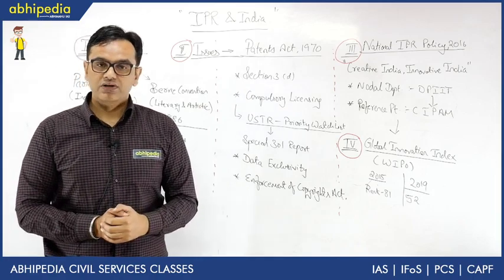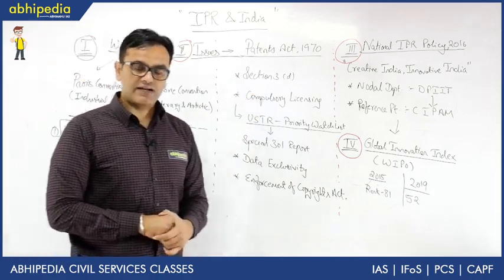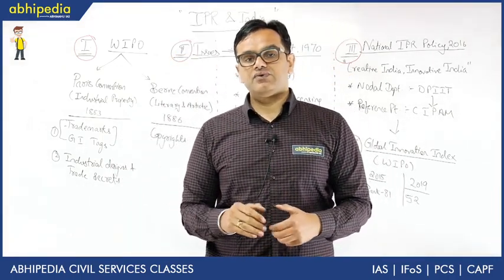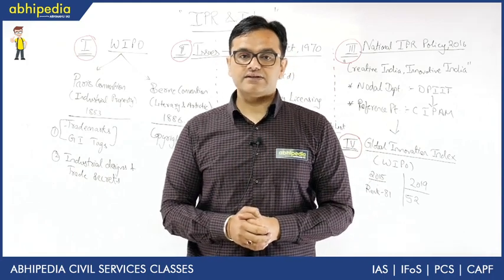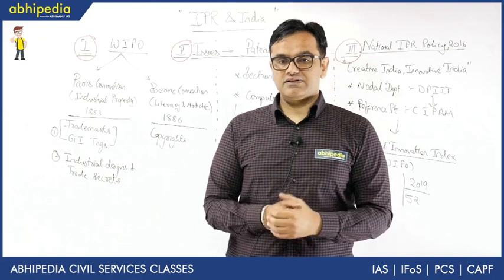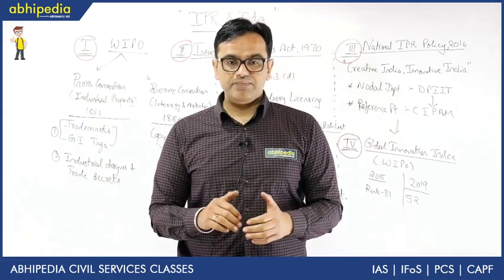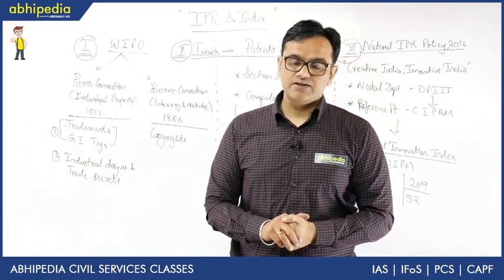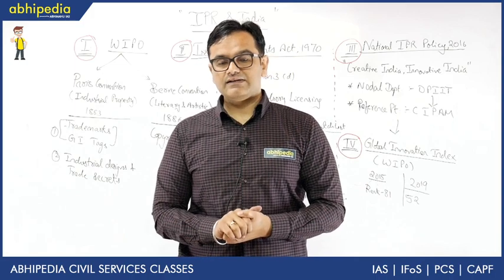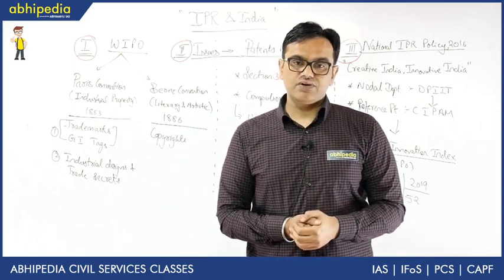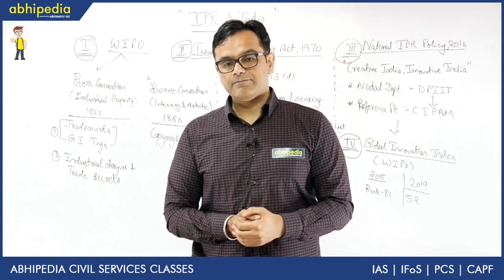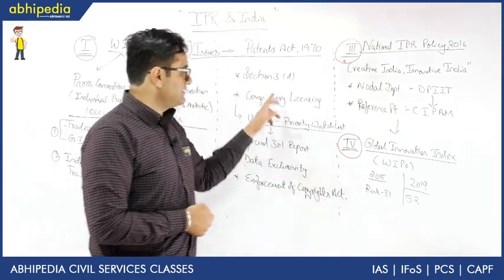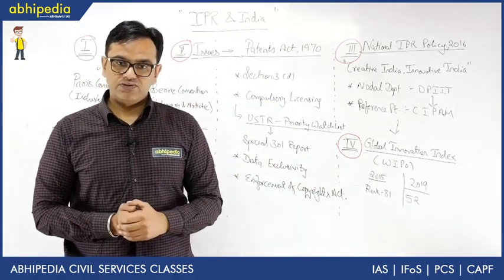Under the Patents Act there are certain issues that come into the news. First is Section 3D. The Supreme Court in the Novartis case rejected any new patent for its drug Gleevec where there was no efficacy improvement. Essentially under the Patents Act a 20-year patent is provided, but unless the efficacy of the product for which you are asking renewal of the patent improves, that patent cannot be reissued. This is Section 3D — it prevents evergreening of patents.